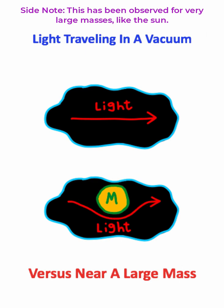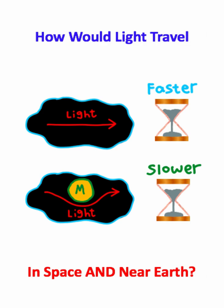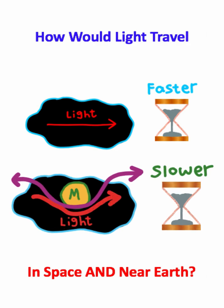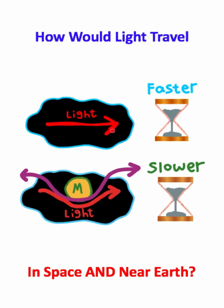And hence the name spacetime, this curvature also impacts time. In these gravitational wells, time actually ticks by slower, because the presence of curved spacetime causes light to travel a farther distance while remaining a constant speed.